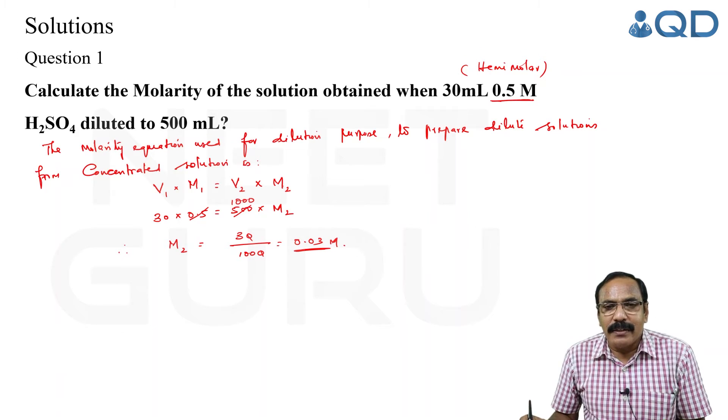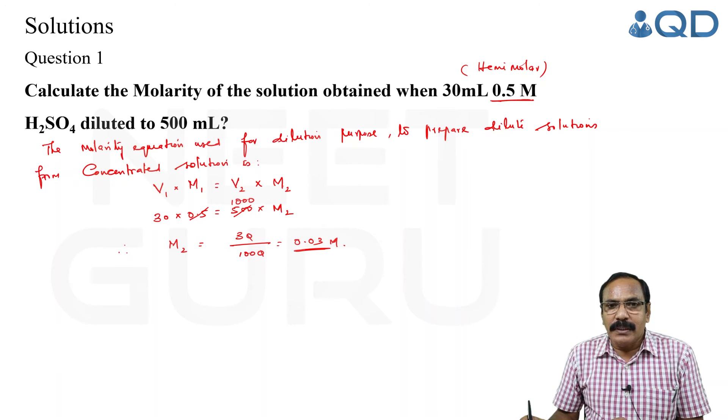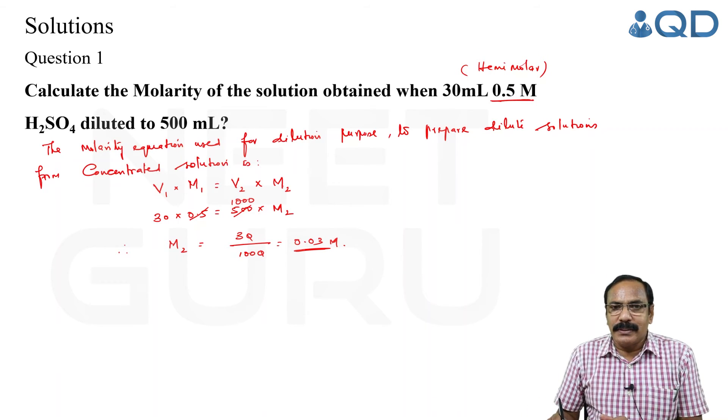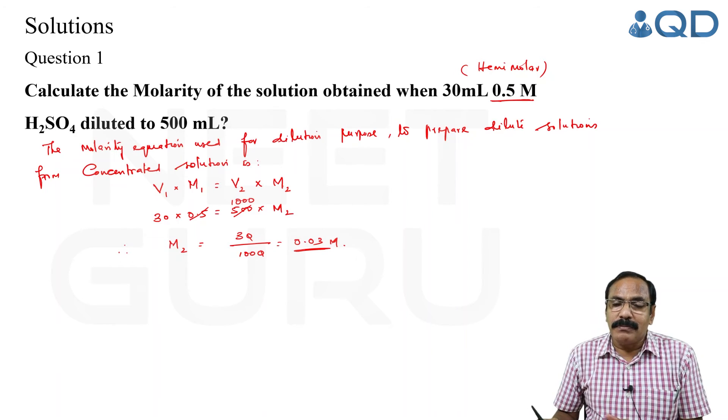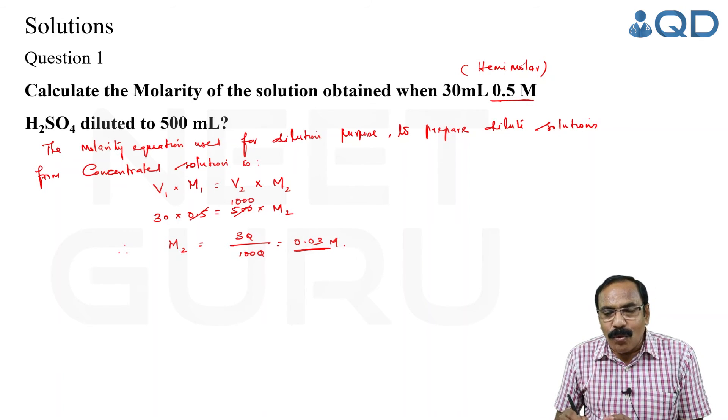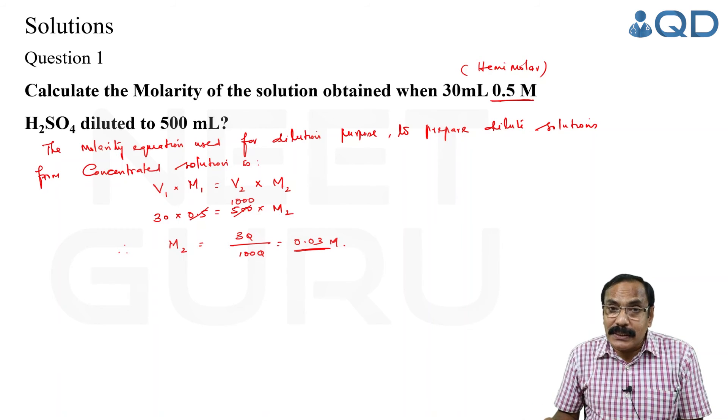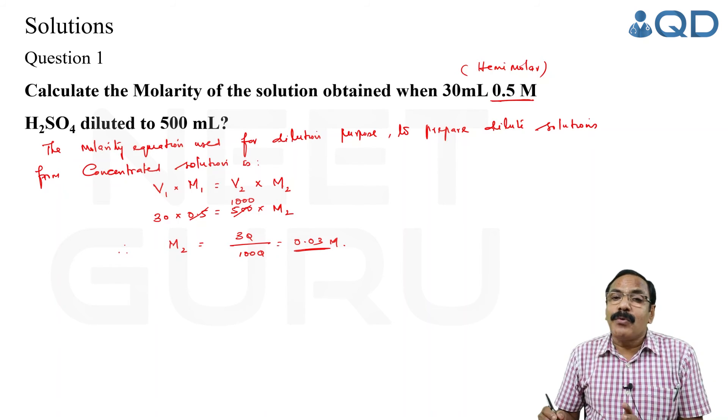Hope it is clear. So we discussed seven concentration units, their formulas, and a simple problem for calculating molarity of dilute solutions. We will be doing more practice problems under concepts and snippets throughout this year. We have totally 16 chapters in Plus 2.